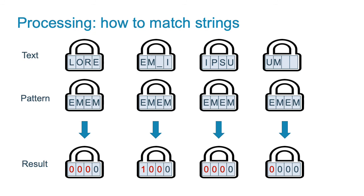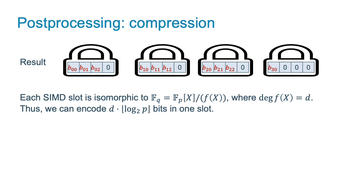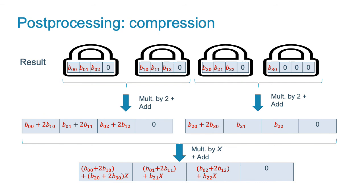Thus, the communication complexity is going to be similar to sending all the text back to the client. However, we can compress the results in the following way. Remember that every SIMD slot is isomorphic to finite field fq. Thus, it is able to store log q bits, but the output ciphertexts contain only one bit per slot. We can pack these bits first as elements of the prime field fp. It can be done by multiplication by a power of 2 and addition. Since fq is isomorphic to a polynomial ring quotient over fp, we can pack prime field elements as coefficients of polynomials. This is done by multiplication by a power of x and addition. As a result, four ciphertexts are compressed into one. Moreover, one slot is still free, so we can pack more data there.